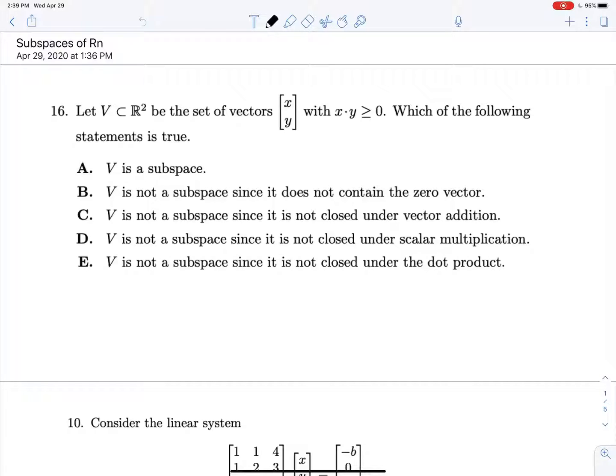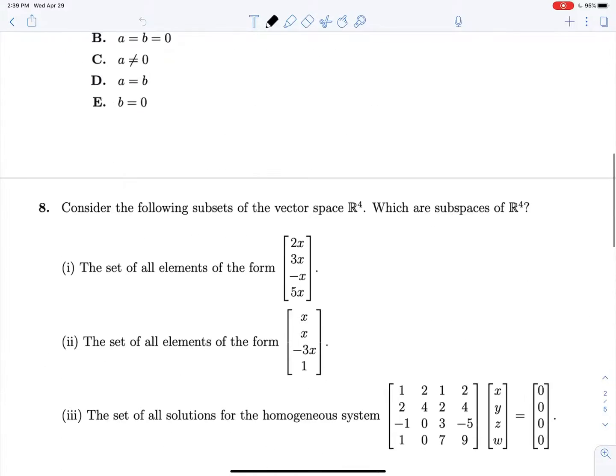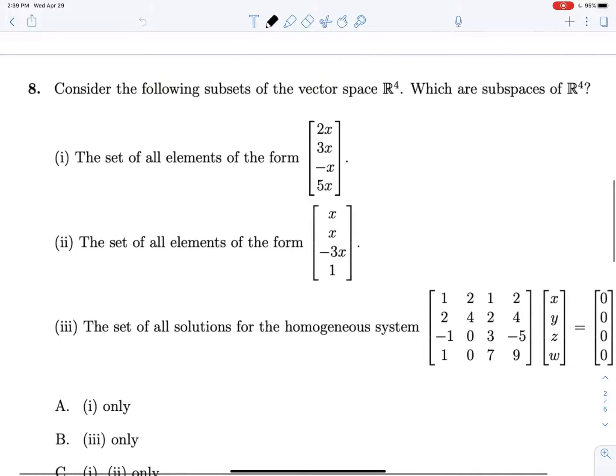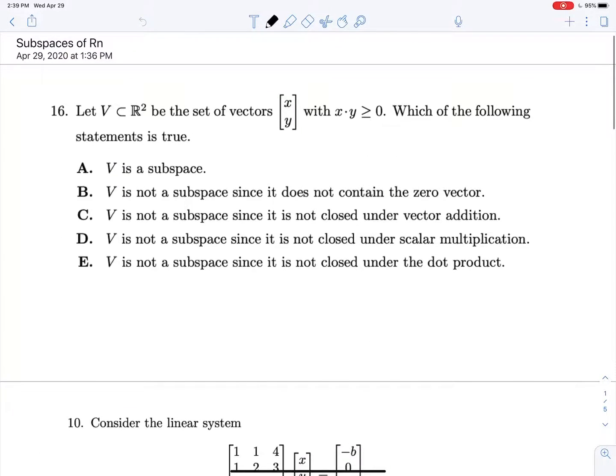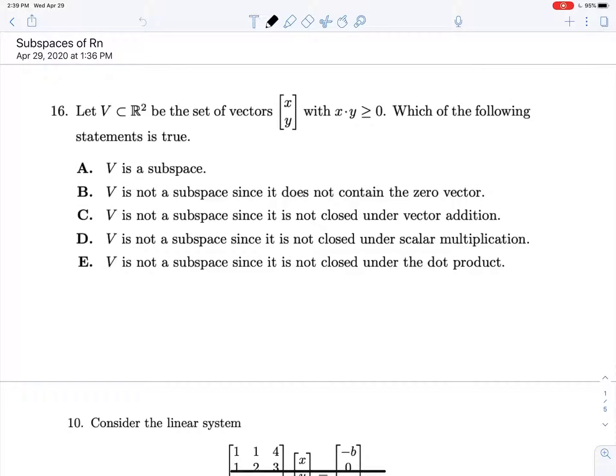We're talking about subspaces of Rn, and these are the most tame subspace questions you can get, especially the ones where you're given something like this, just to pick which ones out of a couple options are subspaces. And let's just go over quickly, and 16 is actually perfect for this.